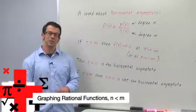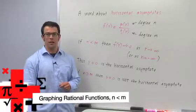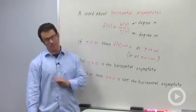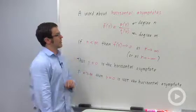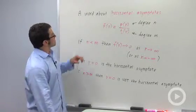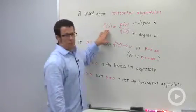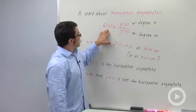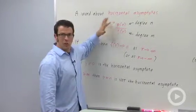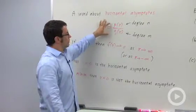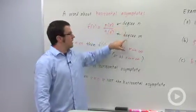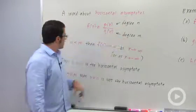I want to graph rational functions, and we're going to start with rational functions where the degree of the numerator is less than the degree of the denominator. So let's talk a little bit about horizontal asymptotes. If our rational function is f of x equals p of x over q of x, where p and q are polynomial functions, let's say the numerator has degree n and the denominator has degree m.